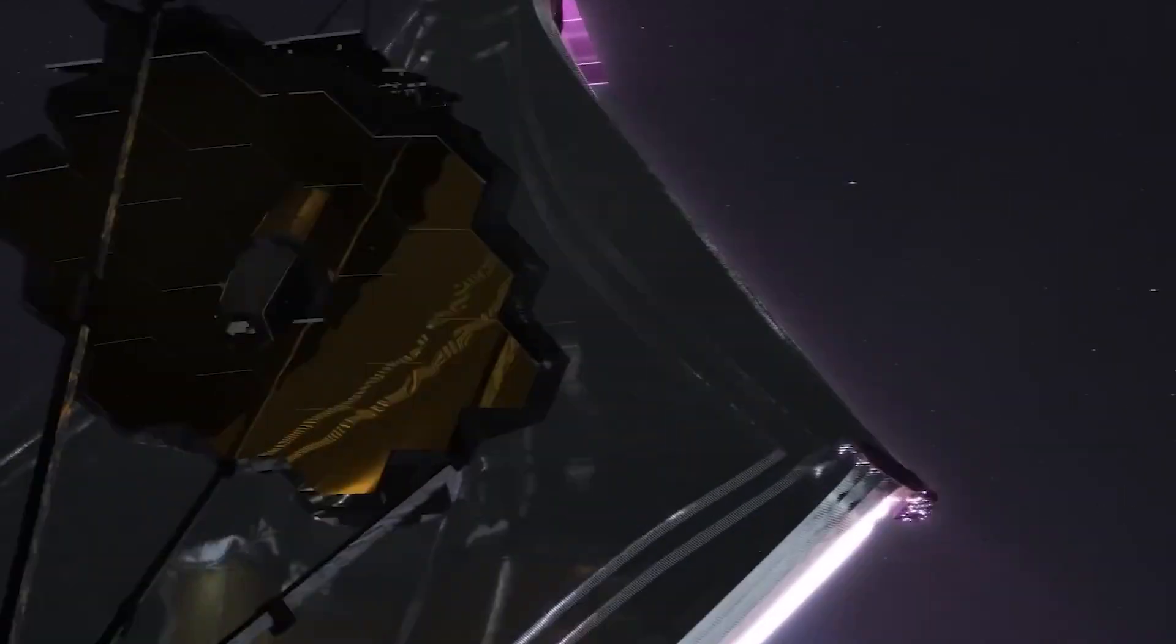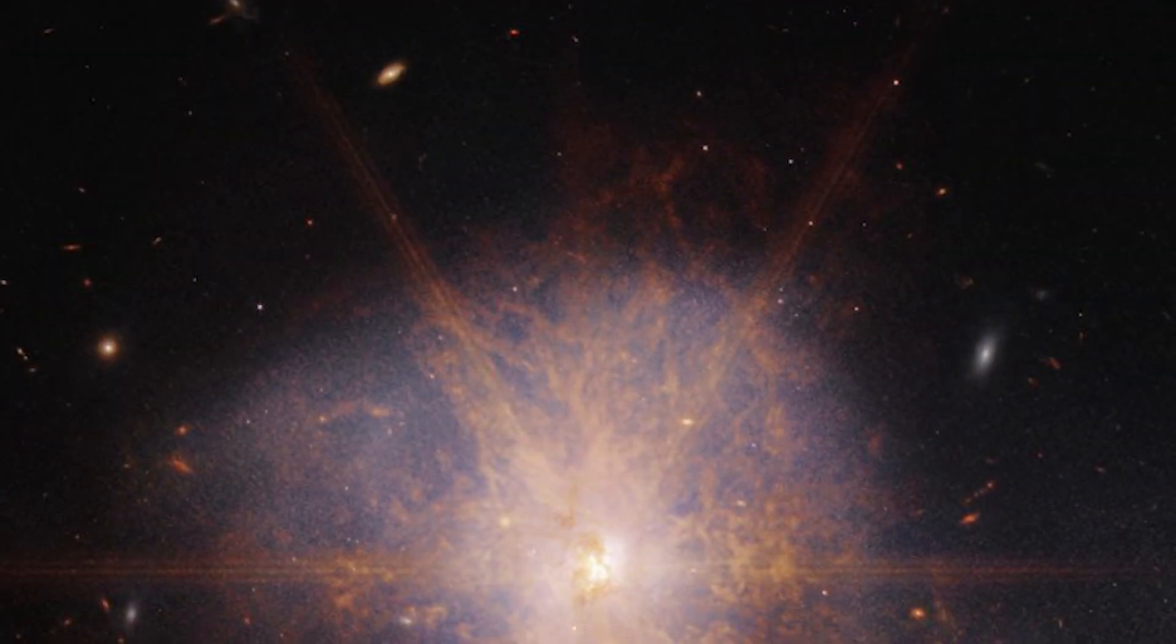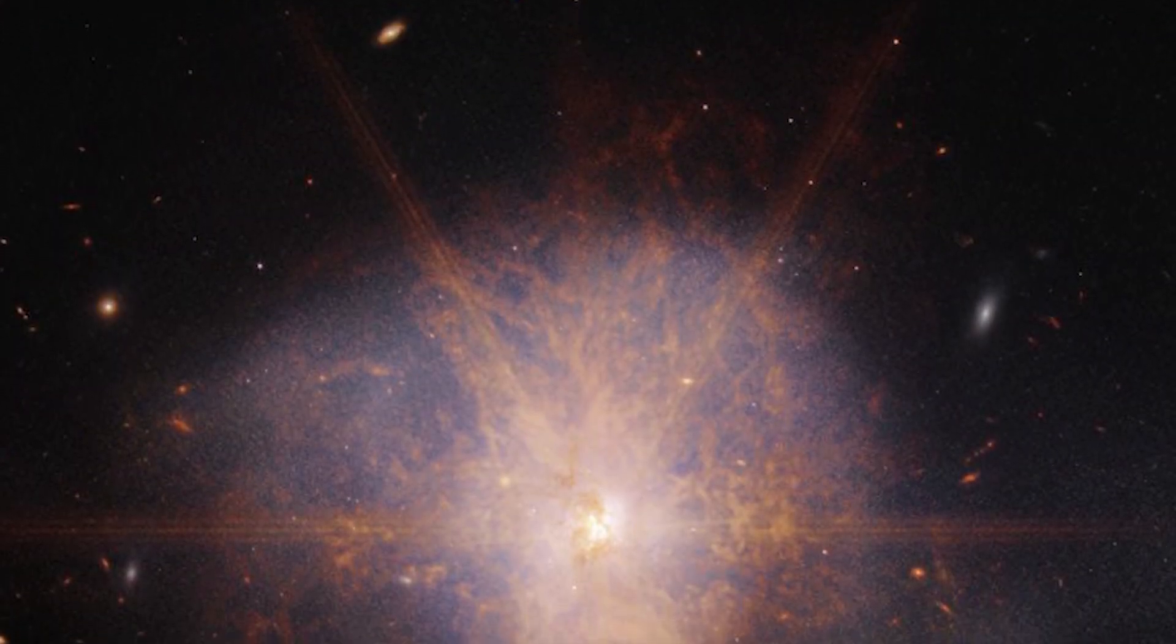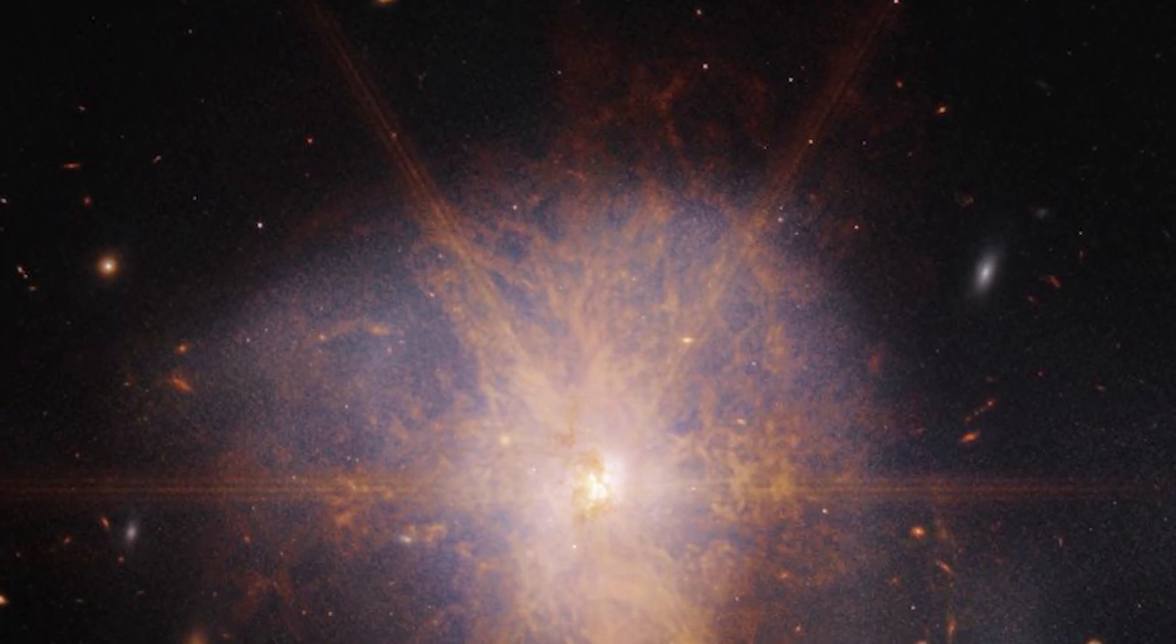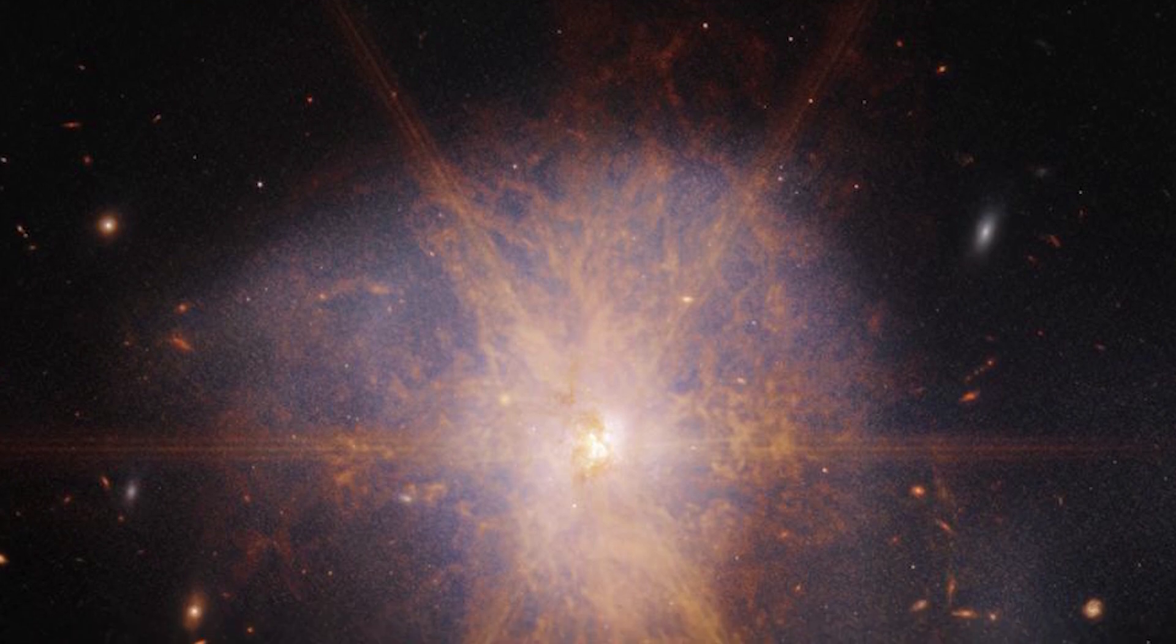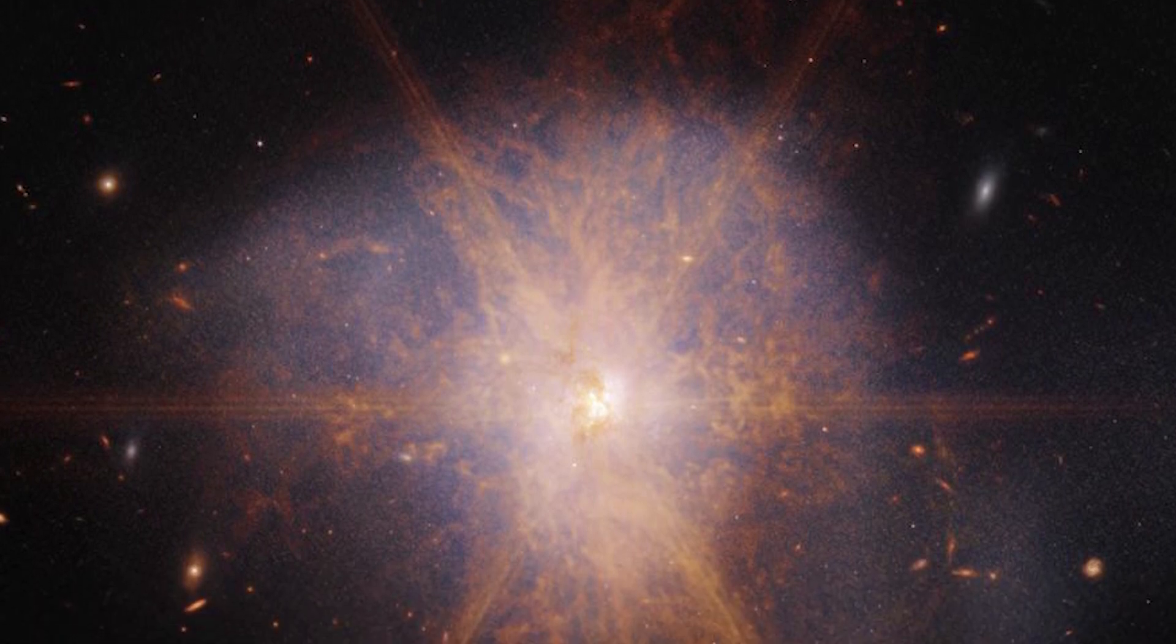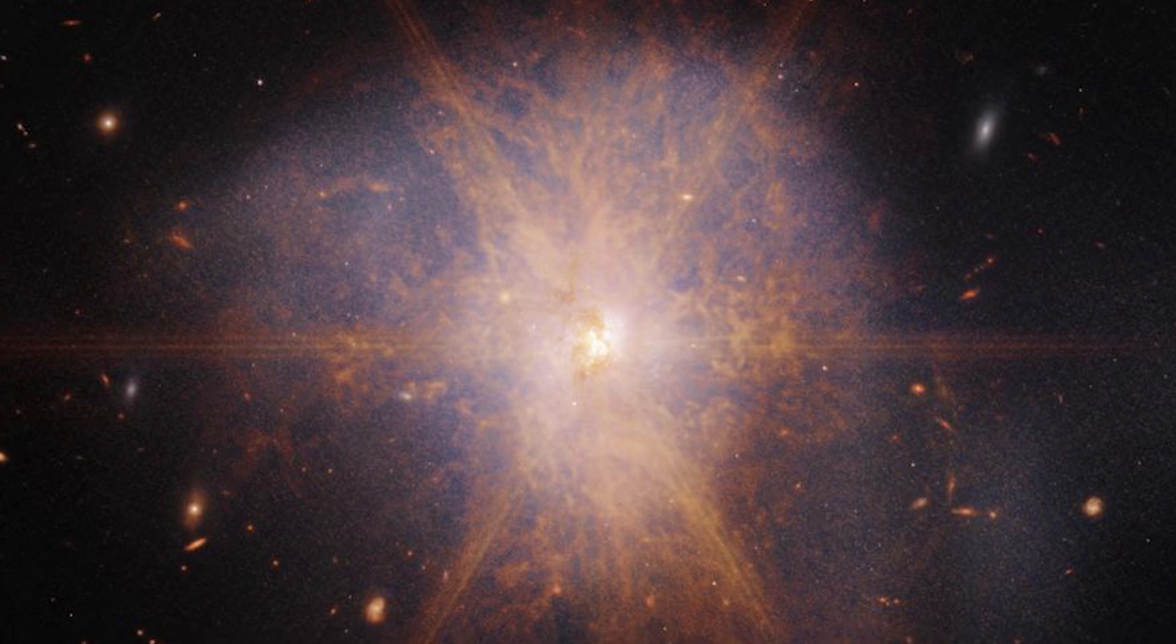The latest views from the James Webb Space Telescope shows an impressive galactic merger of the two galaxies. This image also shows faint tidal tails extending from the outskirts of the merger, indicating the gravitational pull between the two galaxies.